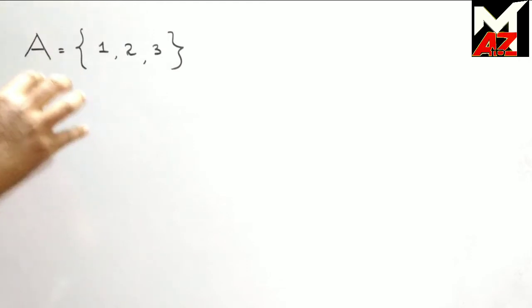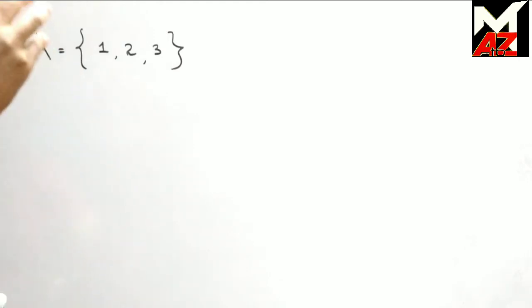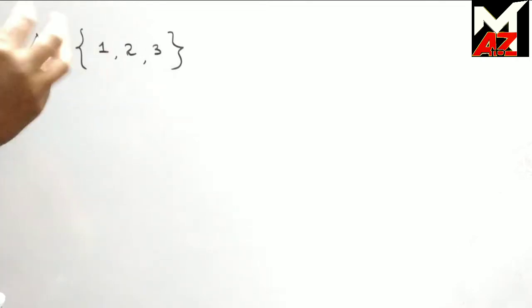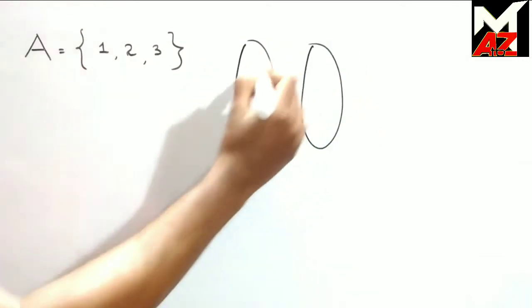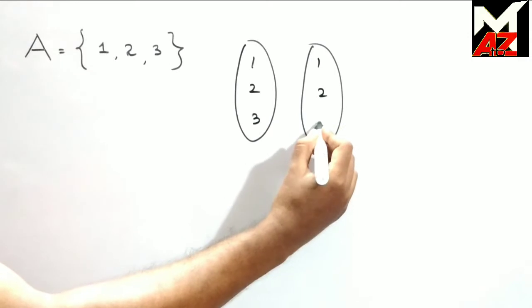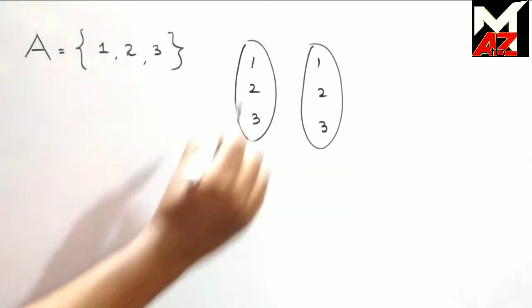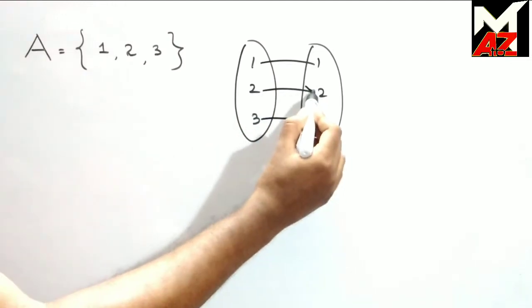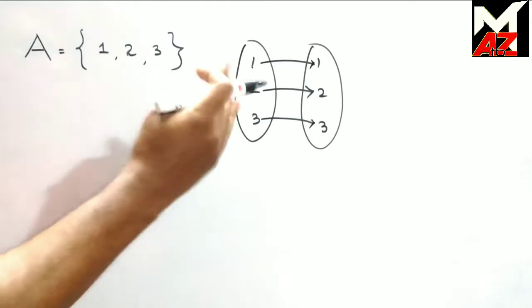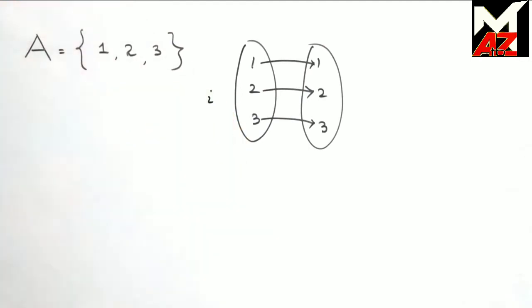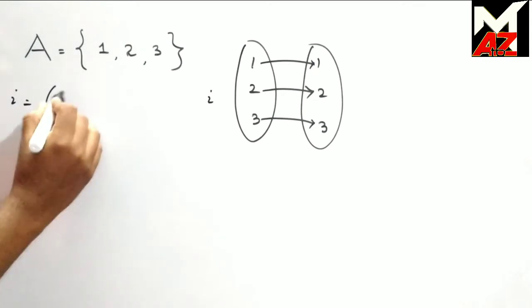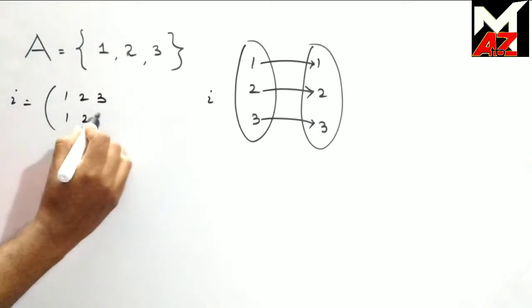Now we take all the bijective mappings from A to A, or bijective mappings on A to itself. The first bijective mapping, obviously, is the identity I, which can be written as (1 2 3 / 1 2 3).